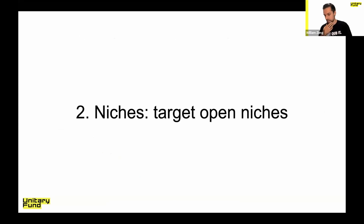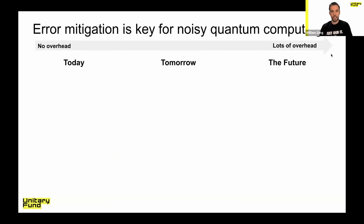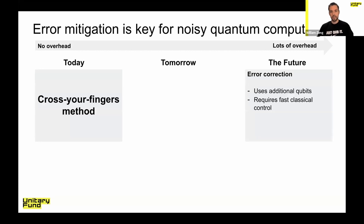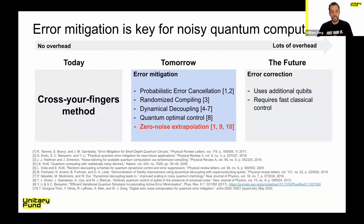The second strategy is about niches. I'll use MITIC as an example, because this niche process was what went into how we decided to build it. Error mitigation is key for noisy quantum computing, and our quantum computers are very noisy today. Today you could cross your fingers or try some variational technique. Long term, we'll have error correction of some kind, with overheads of additional qubits and requirements for fast classical control. In between is what I'll class as error mitigation schemes — there are a lot of them, really clever techniques ranging from probabilistic error cancellation to zero-noise extrapolation, which is what MITIC focuses on first.